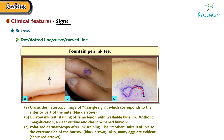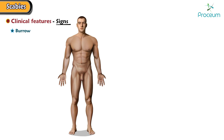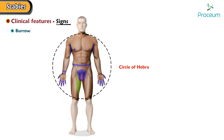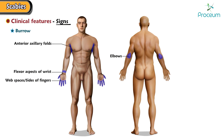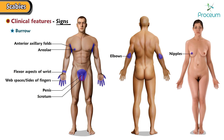The burrow is identified through a fountain pen ink test. Lesions are commonly distributed as the circle of Hebra, seen over web spaces, sides of the fingers, flexor aspects of the wrist, elbows, anterior axillary folds, penis, scrotum, areola, nipples in women, thigh, buttocks, sacrum, and periumbilical areas.